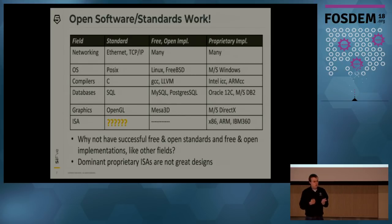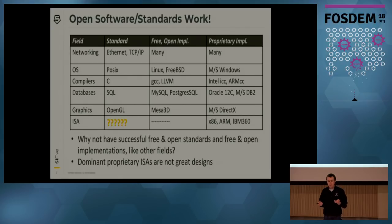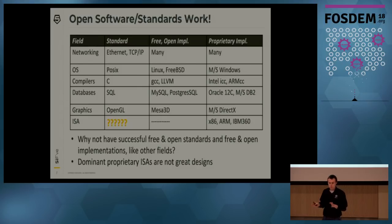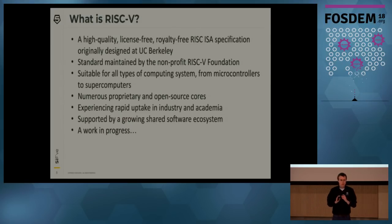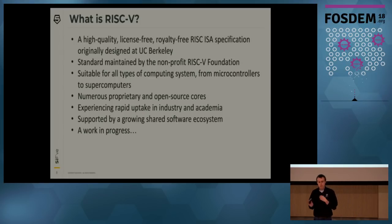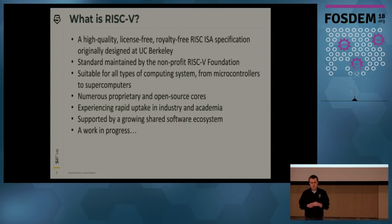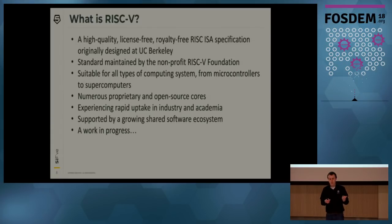It turns out the field is dominated by proprietary ISAs, and they're really not great designs. RISC-V is a high-quality, license-free, royalty-free ISA specification, originally designed at UC Berkeley. The standard is now maintained by a non-profit organization, like many other industry standards. It's suitable for all types of computing systems, from the smallest IoT microcontrollers to the largest supercomputers.